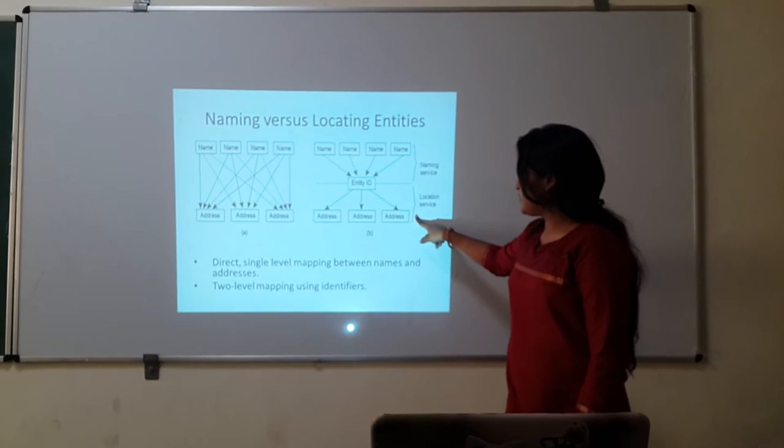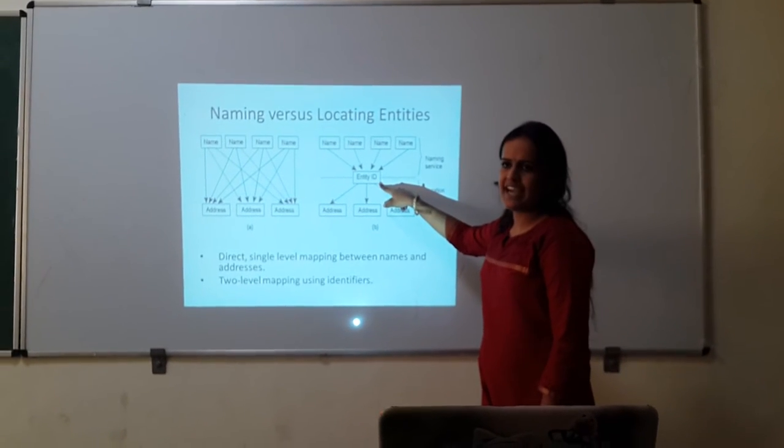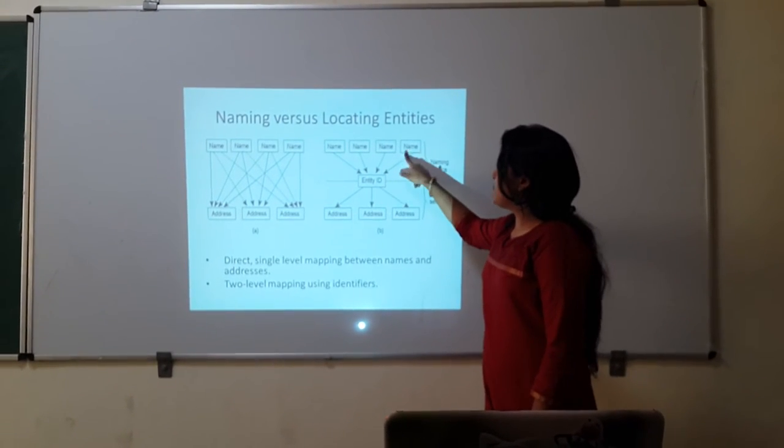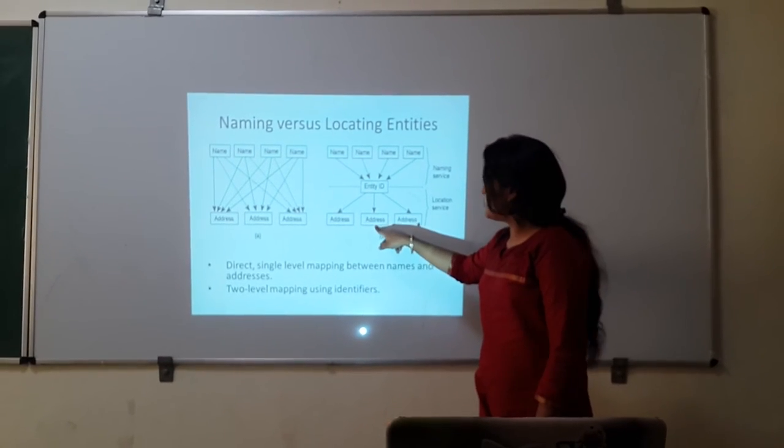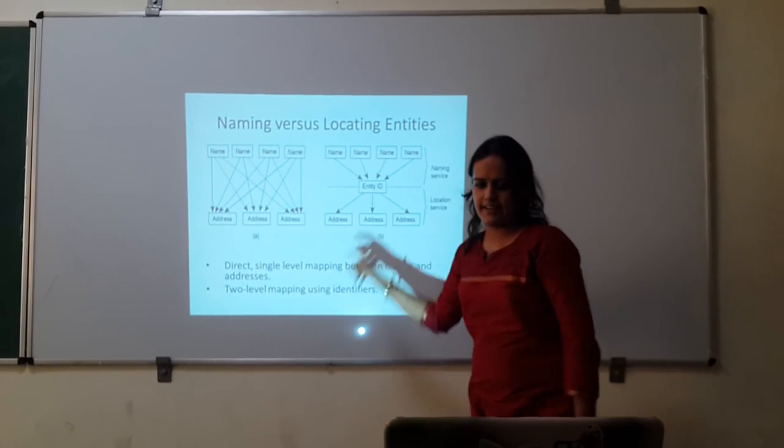The second two level mapping uses identifiers in between. Names are addressed to its identity ID, and then IDs are mapped towards its addresses.